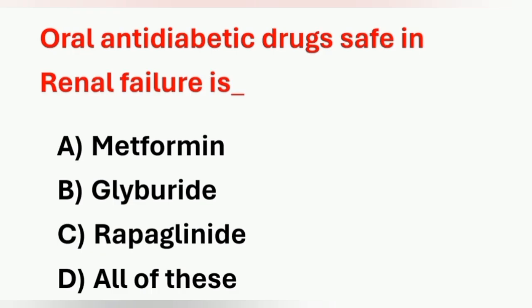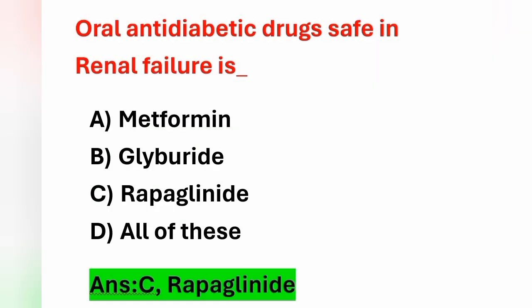Next question: which oral anti-diabetic drug is safe in renal failure? Option A: metformin, option B: glyburide, option C: repaglinide, option D: all of these. The answer is repaglinide, option C, because this drug is excreted through the bile and not through the kidneys.